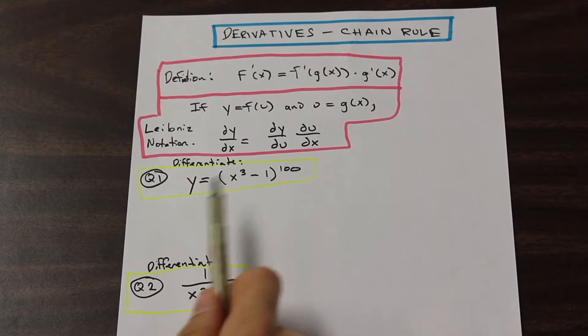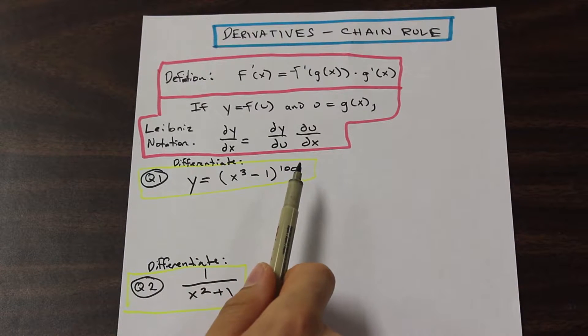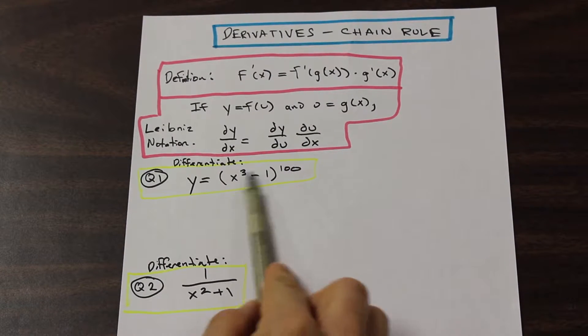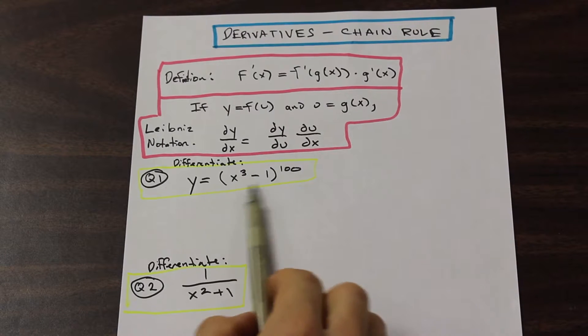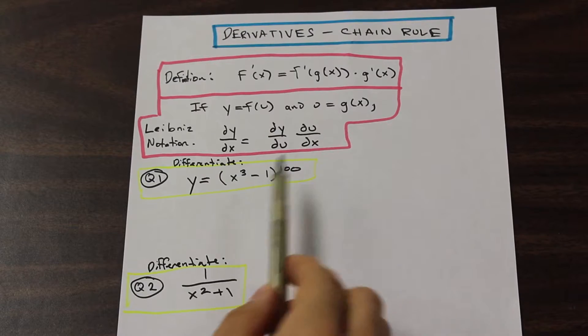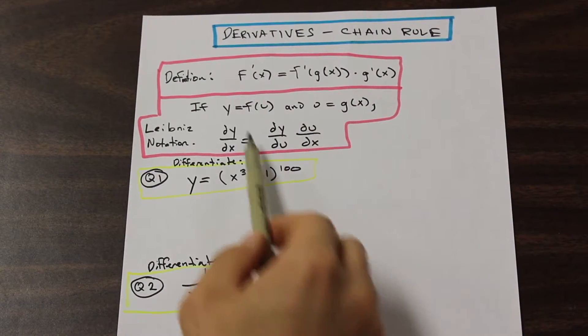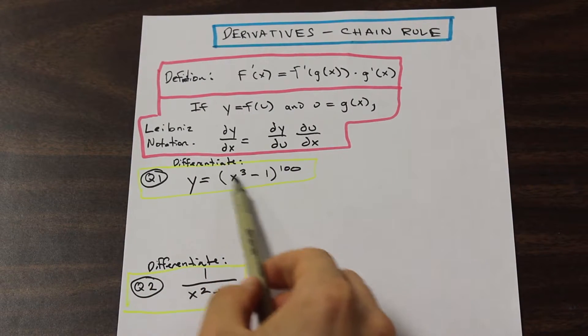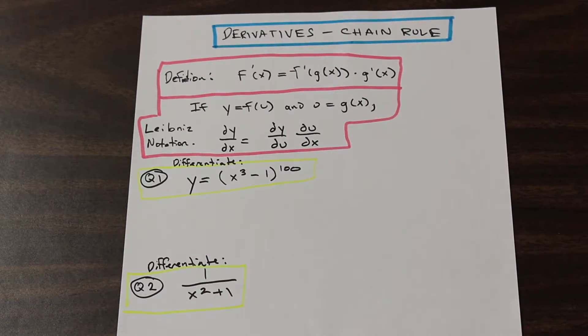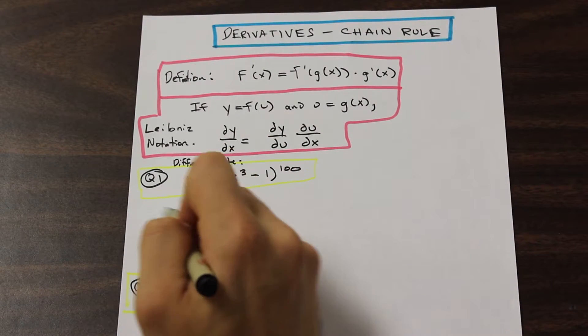So in the first question, it asks us to differentiate Y equals in brackets X cubed minus 1 to the power of 100. So right away, we're going to look for the inner function, the inside of the function. So in this case, it's going to be what's in the brackets. And what's in the brackets here is X cubed minus 1. So X cubed minus 1 is kind of going to be our G of X, it's going to be our U in this notation. So we're going to pretend that that's U, and we're going to differentiate the function Y equals U to the 100. So we're going to pretend that this inner function for now isn't there.